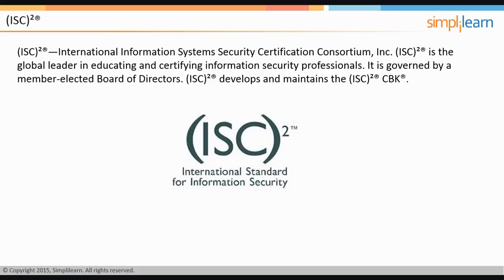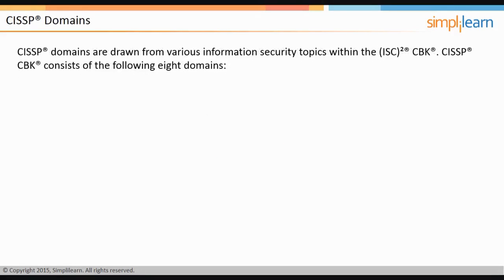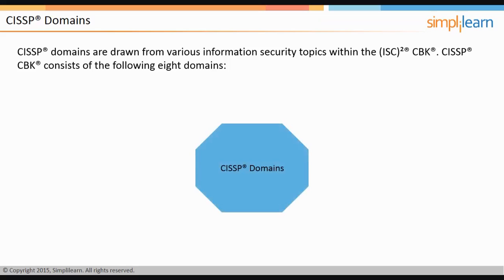CISSP domains are drawn from various information security topics within the ISC² CBK. Updated annually, the domains reflect the most up-to-date best practices worldwide, while establishing a common framework of terms and principles to discuss, debate, and resolve matters pertaining to the profession. The CISSP CBK consists of the following eight domains.